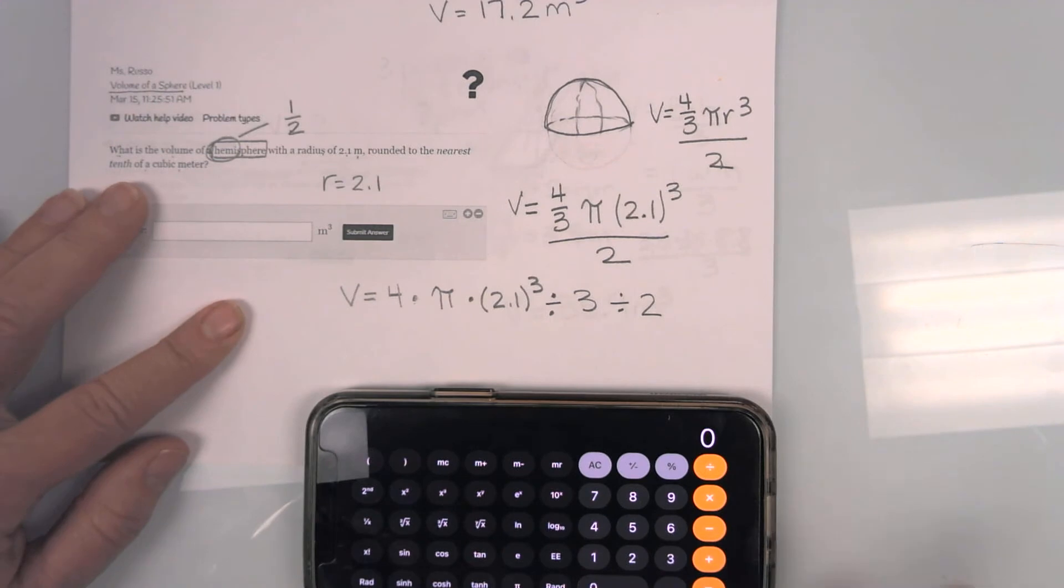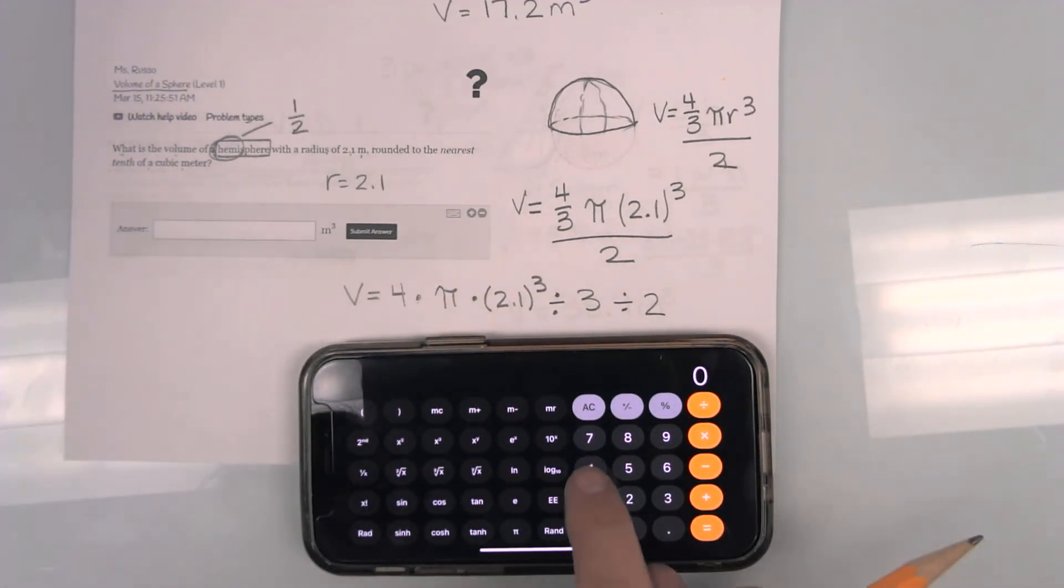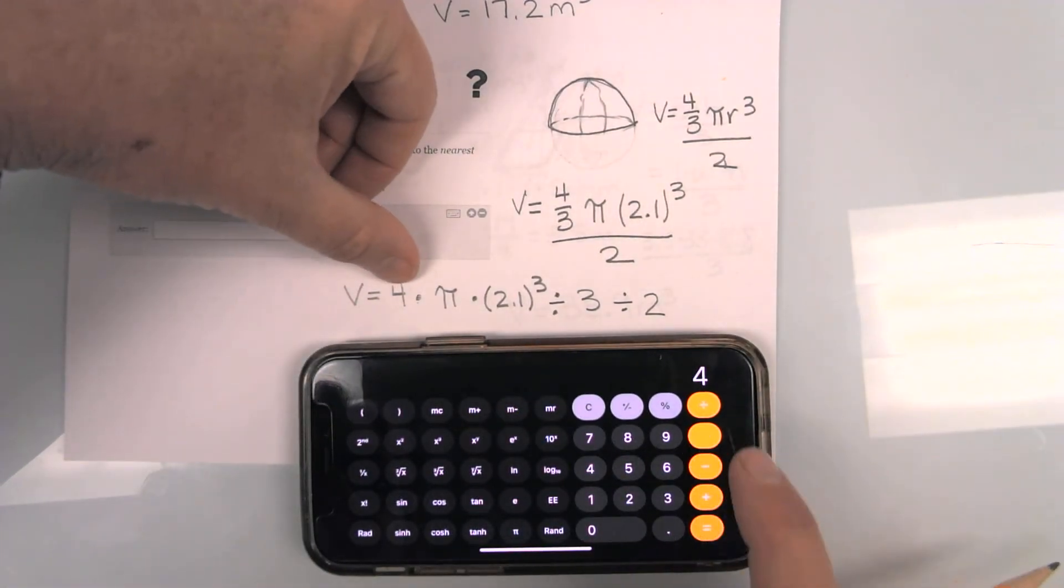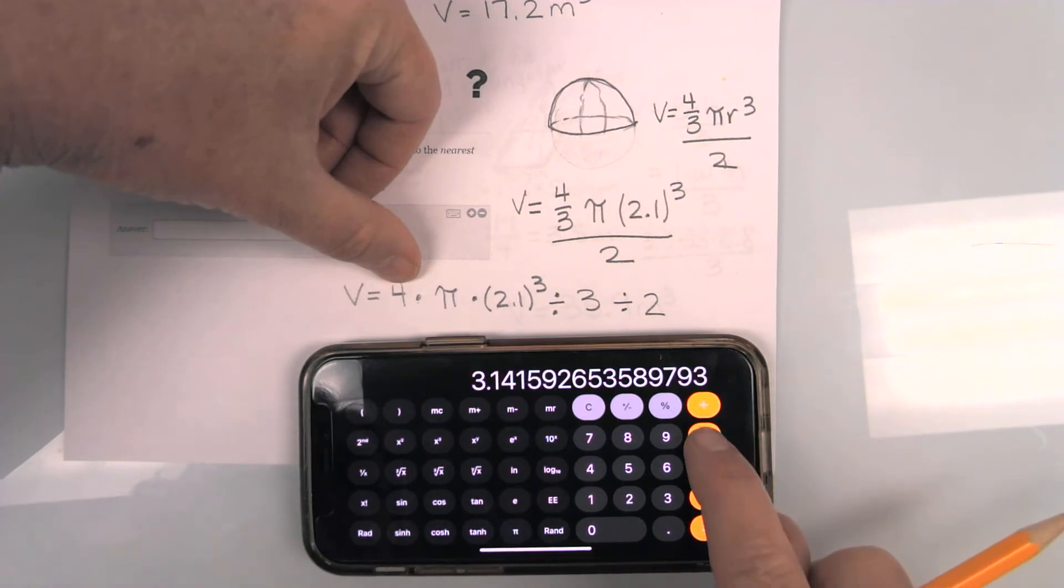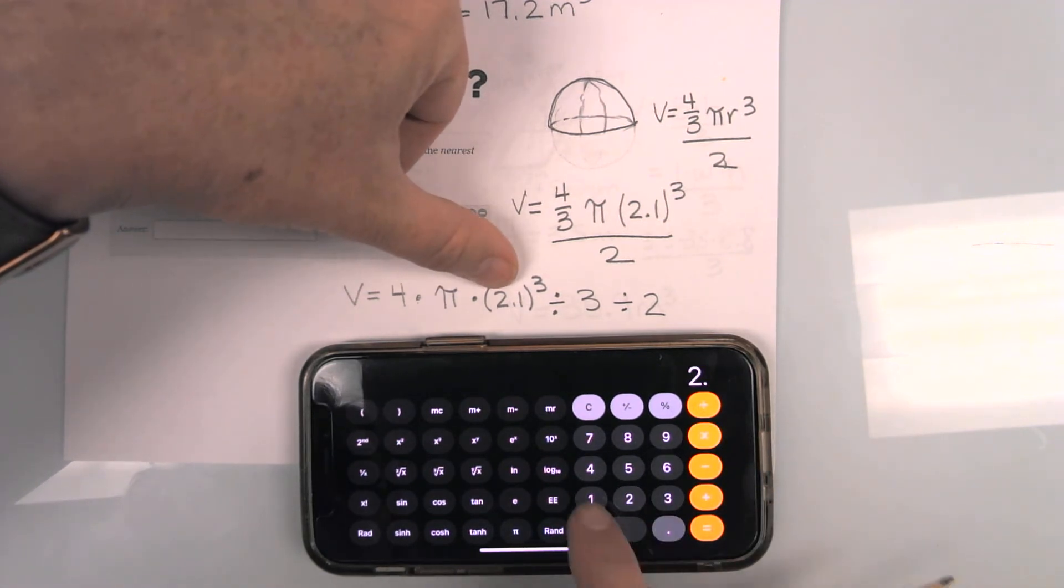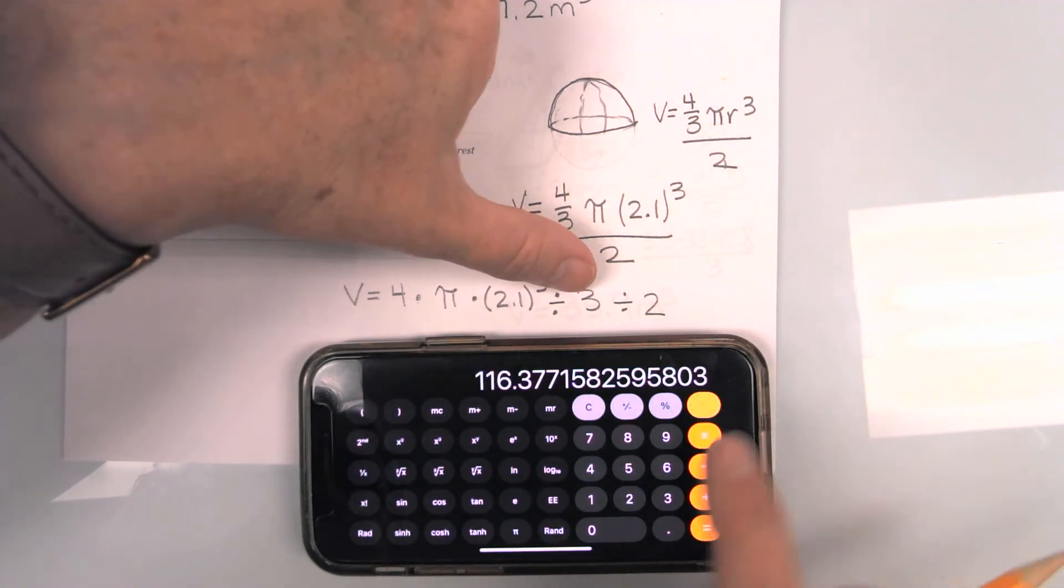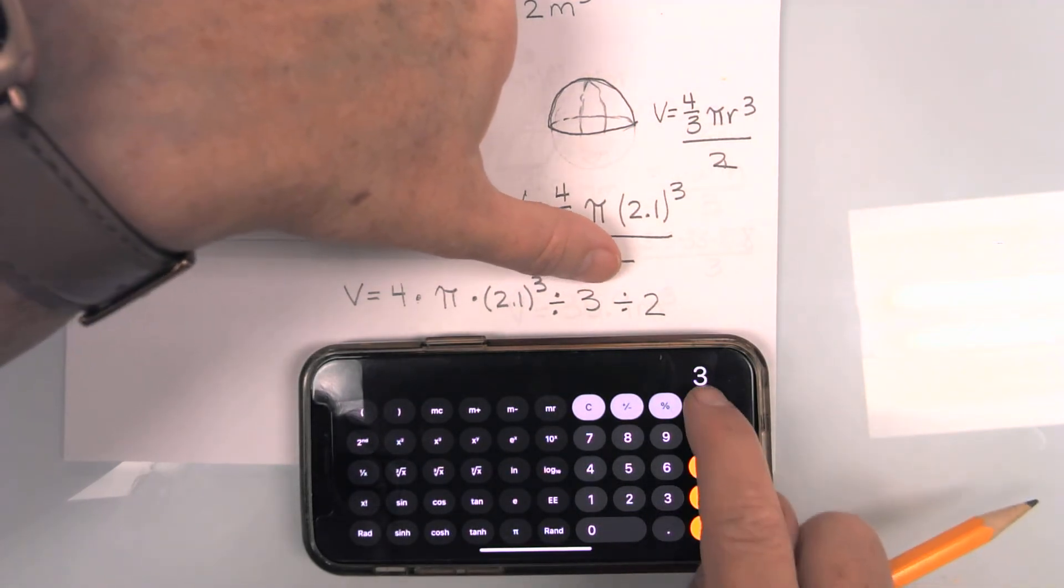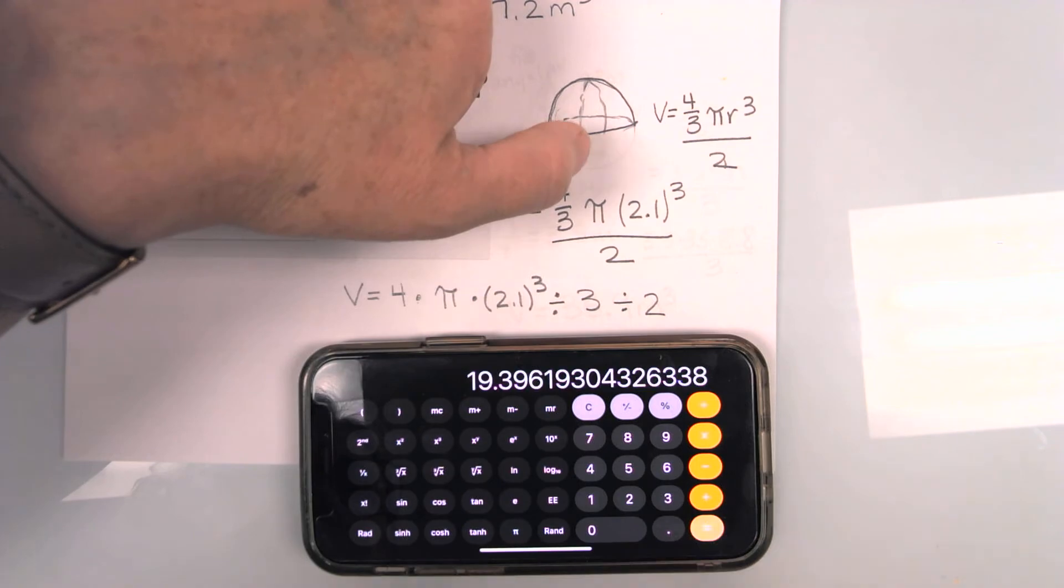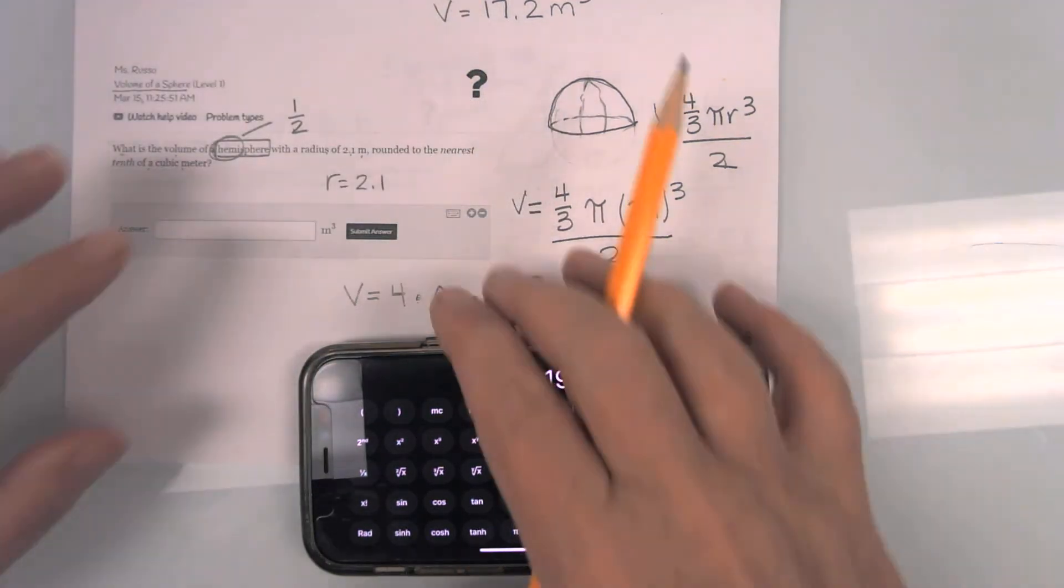Well, I know I have a little bit of a glare. Let's move it down here. So I do four times pi times 2.1 cubed divided by three, then divided by two equals. And there is my number.